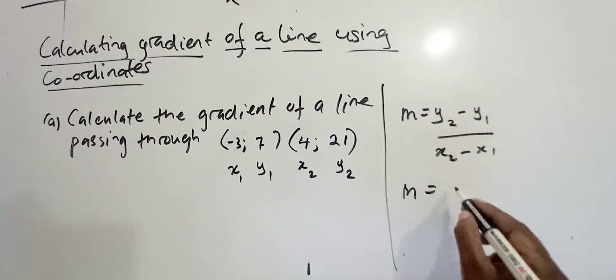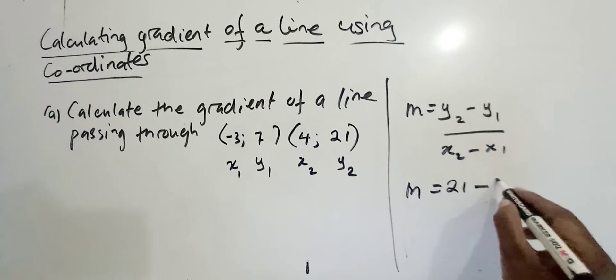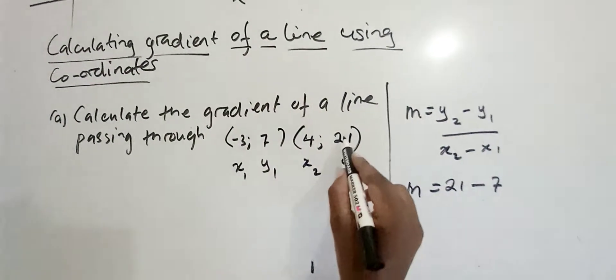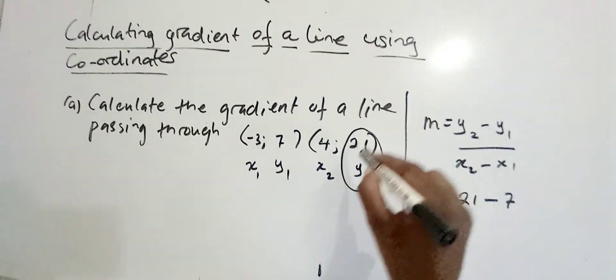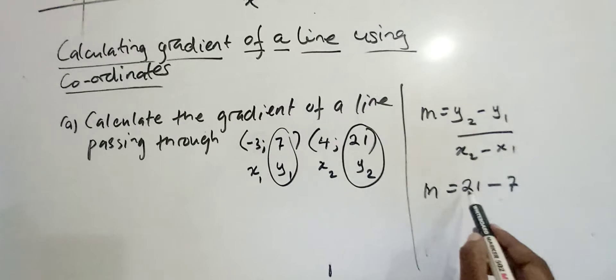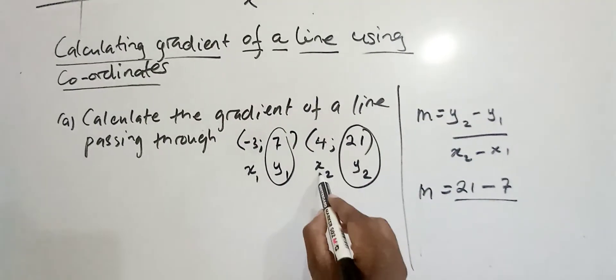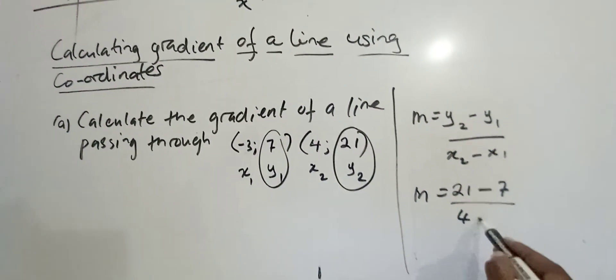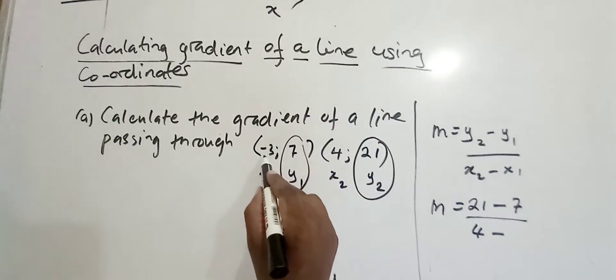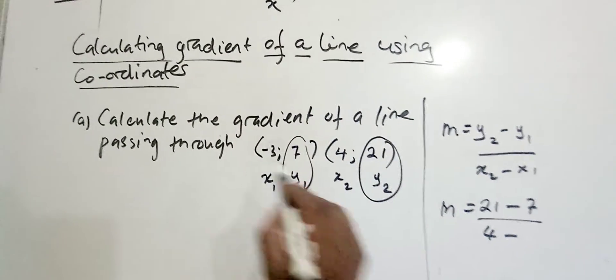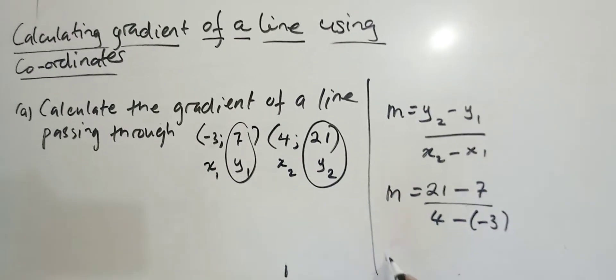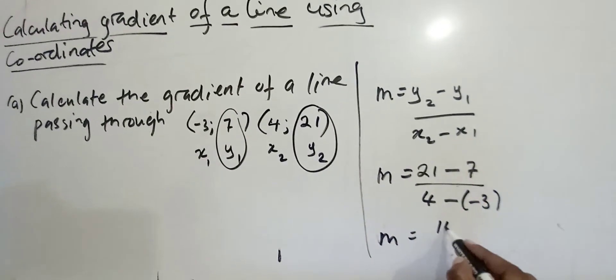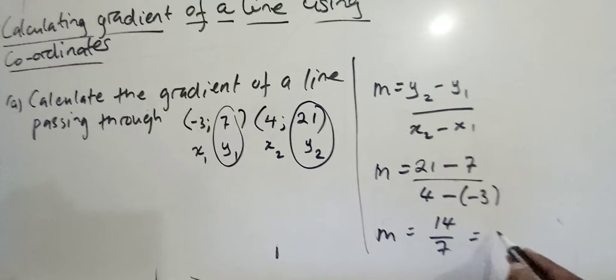Moving on, this gives you 21 minus 7, because that's y2 minus y1. So it's 21 minus 7 over x2, which is 4 minus - take note that this is minus 3 - so 4 minus minus 3. Therefore, this becomes 14 over 7, which gives you 2.